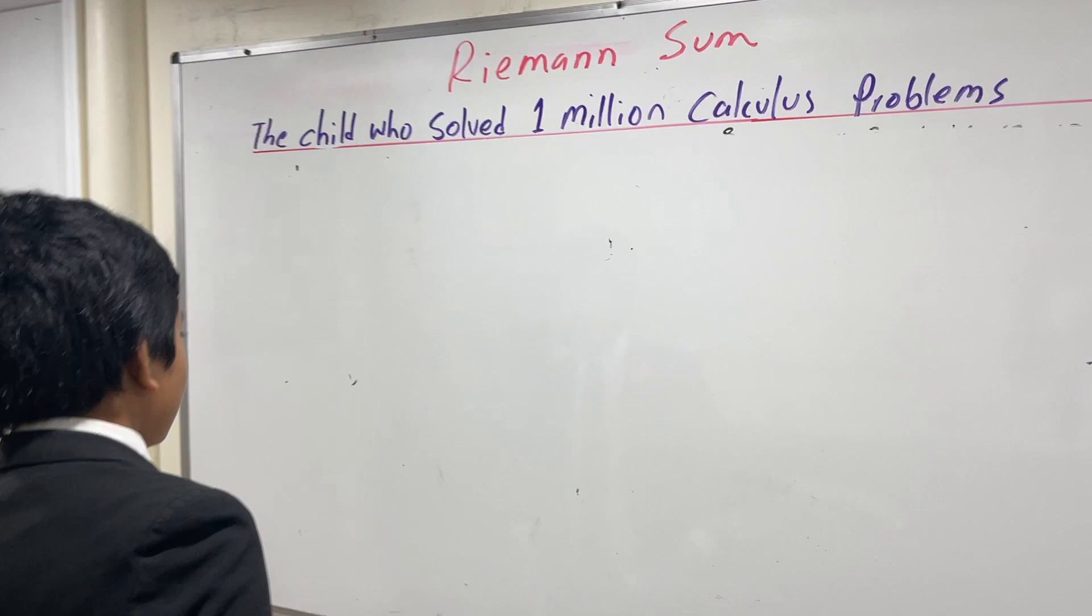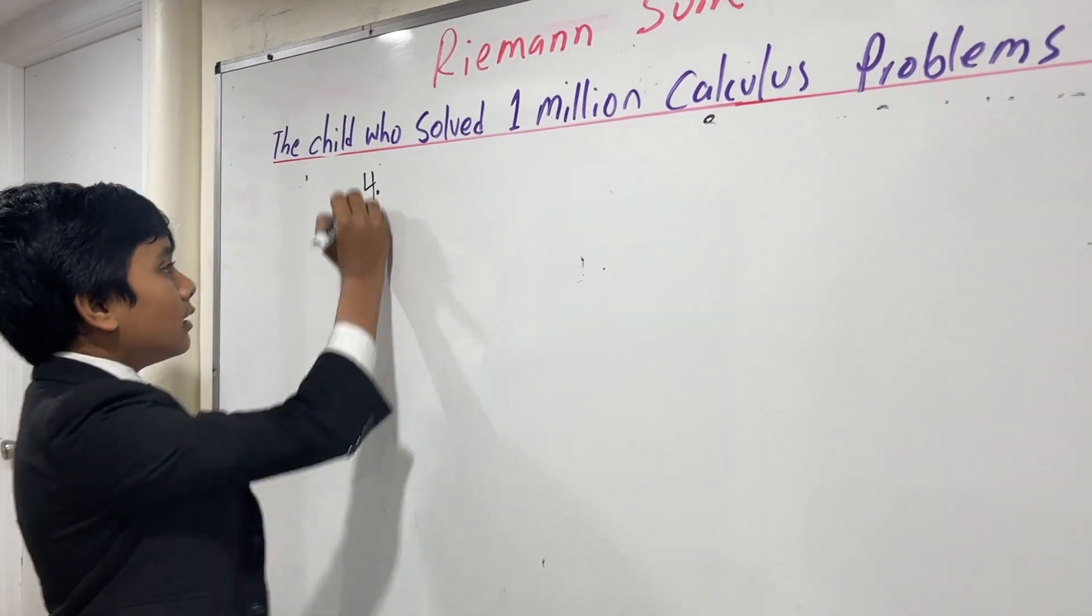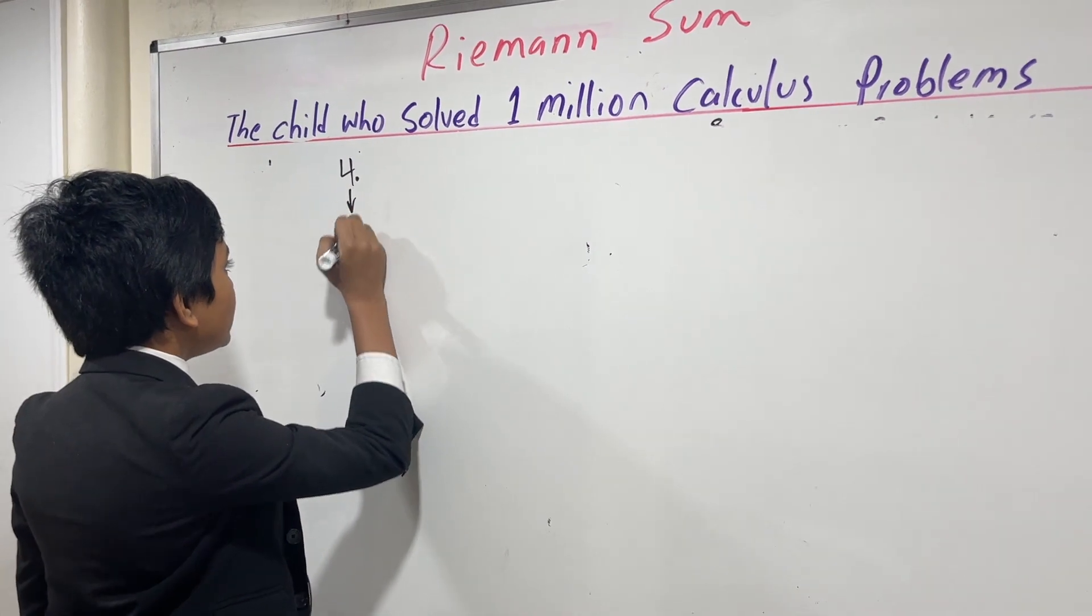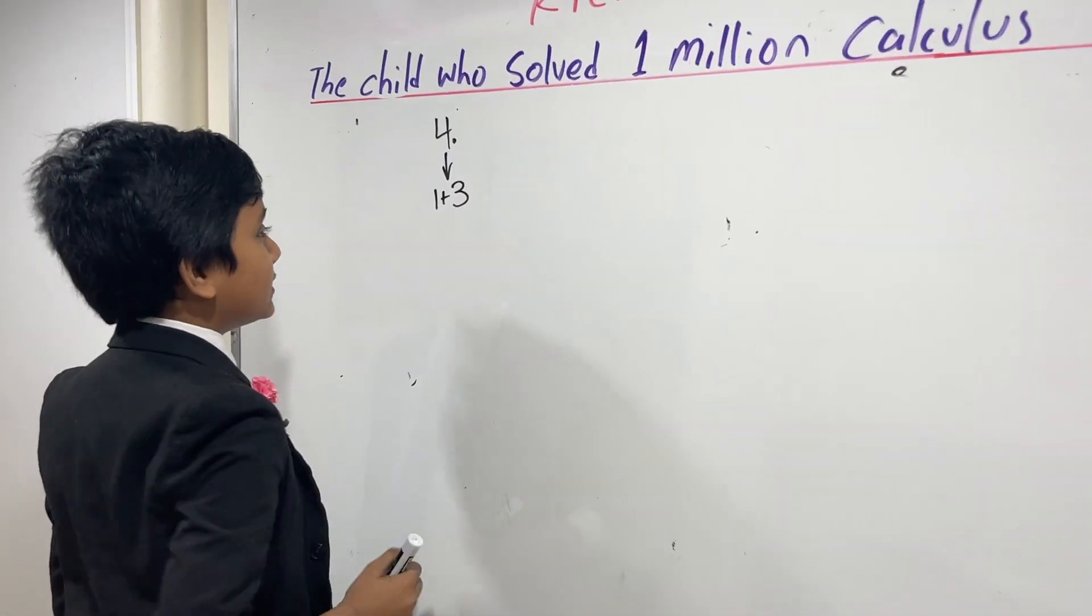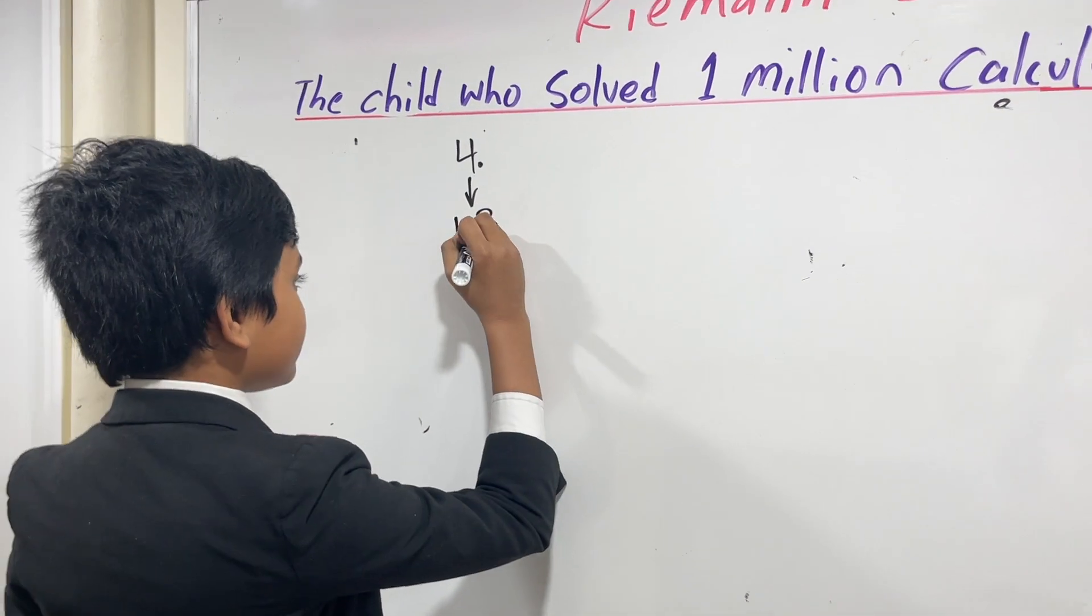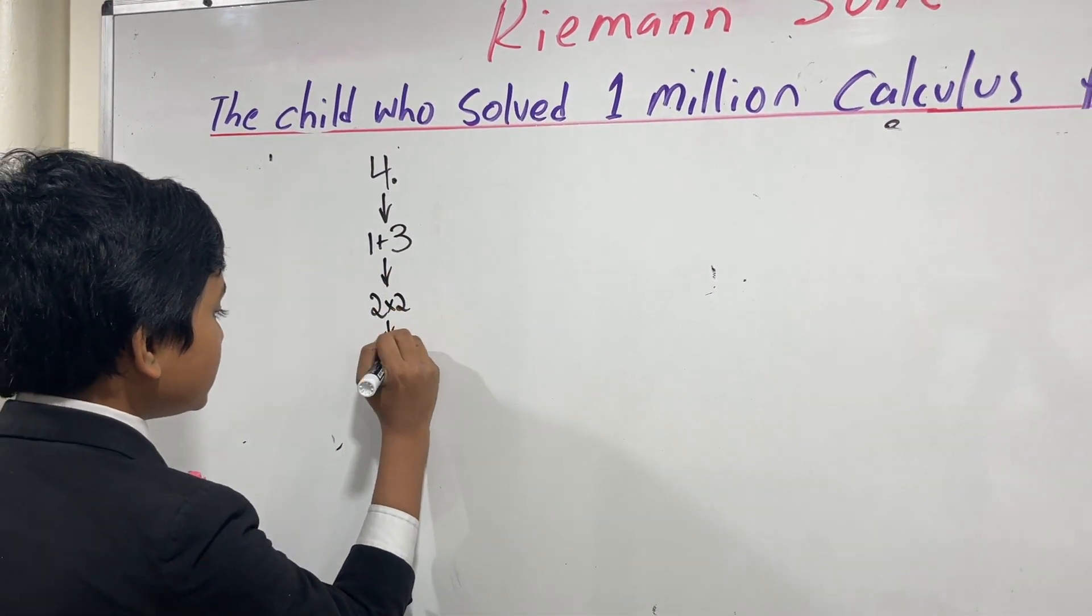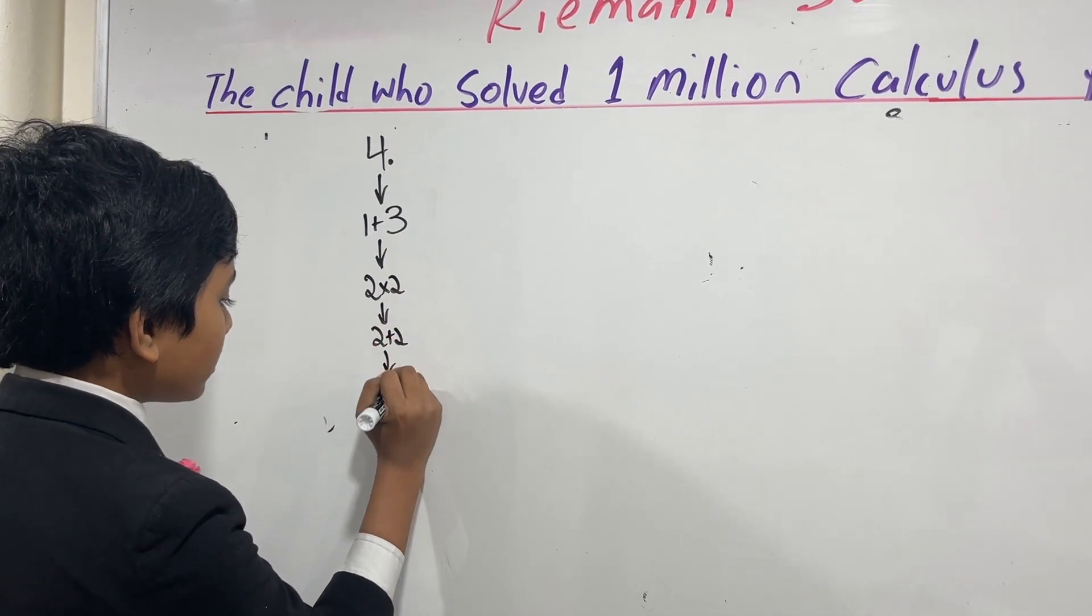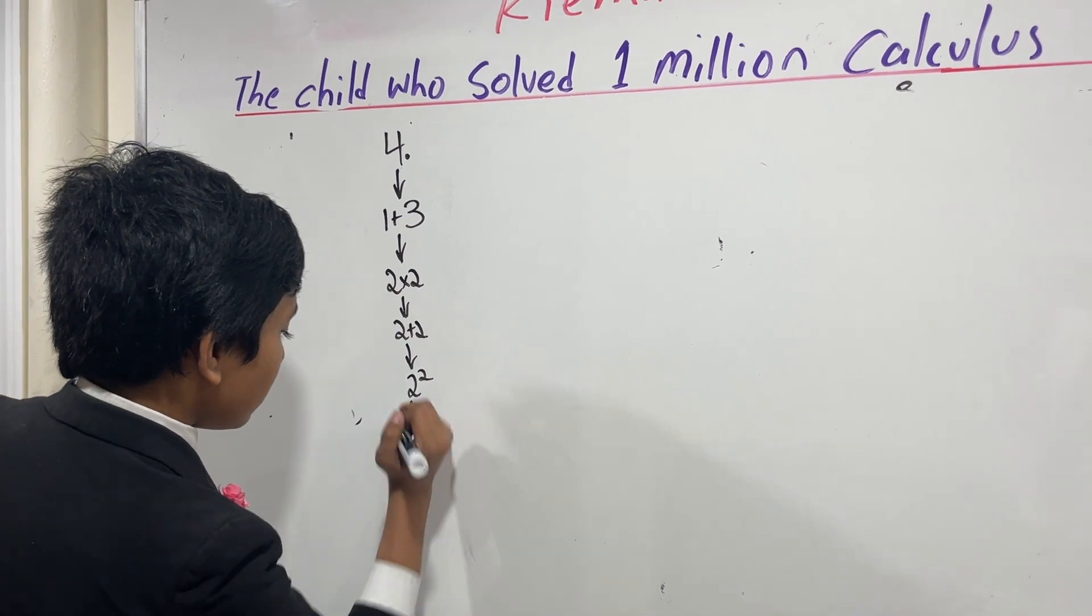Okay, so today we're doing problem number four. Four is actually the only square that can be expressed as one plus a prime number. In this case, three. It's also two times two, two plus two, two squared. And it can be expressed any other way as well.